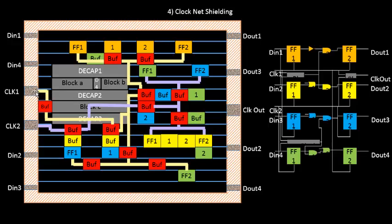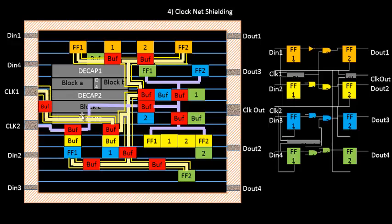What we do is take all the clock nets — for example, this particular clock net — and shield it like this. By shielding, we protect this clock net from the outside world; it's like encapsulating the clock net. Any wire lying nearby will have switching activity on it, and if the coupling capacitance between that wire and this clock net is very large, there might be coupling between them. This results in two problems: glitch and delta delay.